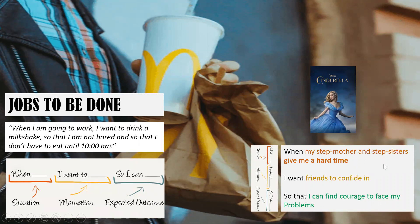In the case of Cinderella: 'When my stepmother and stepsisters give me a hard time, I want friends to confide in, so that I can find courage to face my problems.' That is her jobs-to-be-done statement — identifying the situation, the motivation, and the expected outcome.